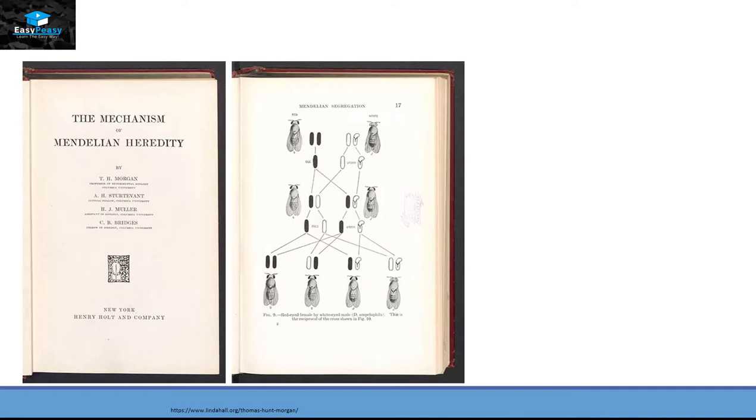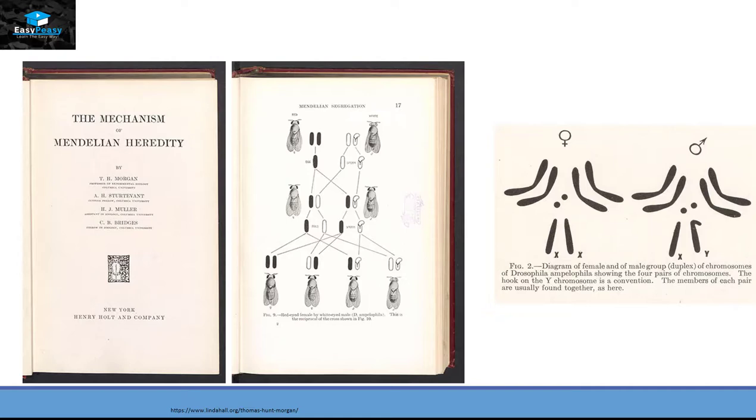Then he published his work as The Mechanism of Mendelian Heredity. And he explained that fruit flies have four different types of chromosomes, and one chromosome is different between male and female. And that is the XX in female fly and XY in the male fly.